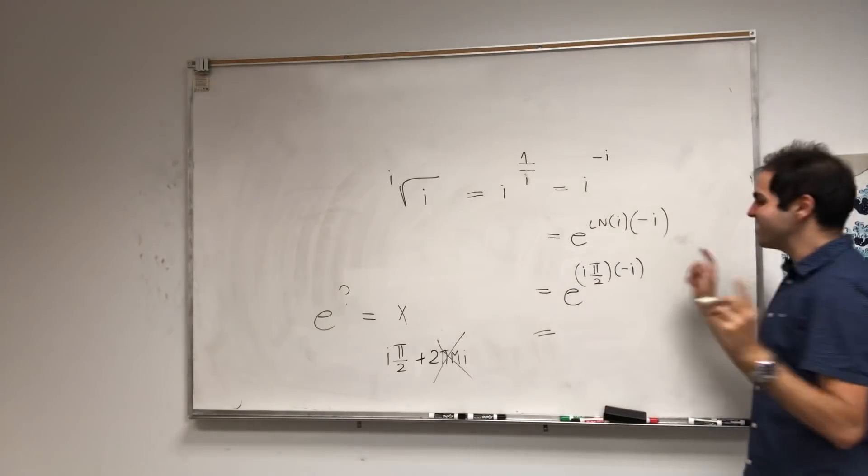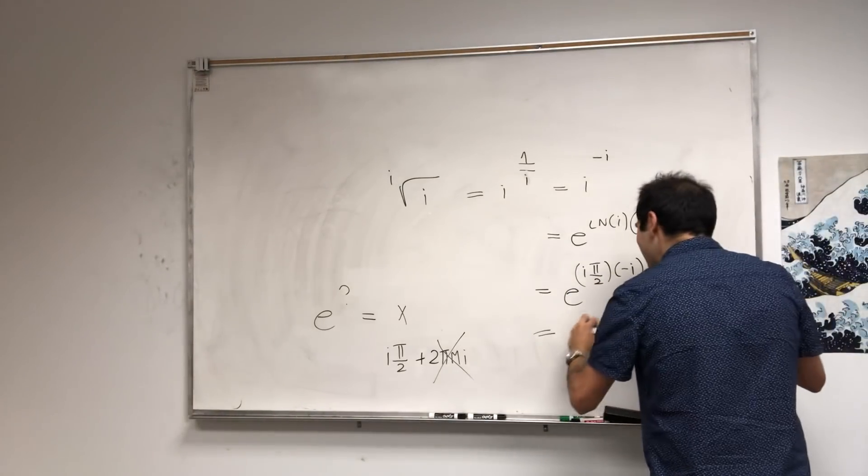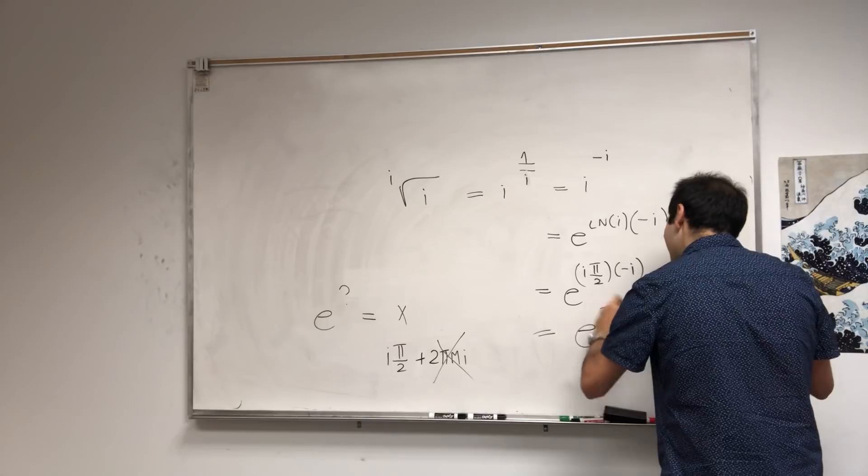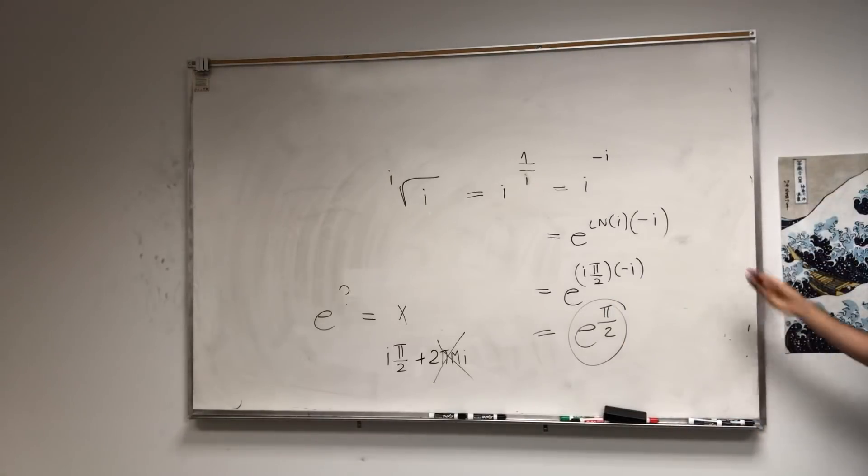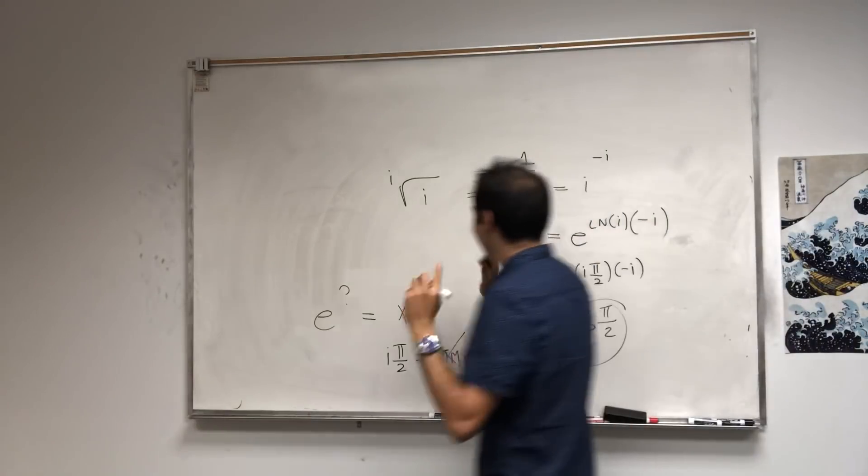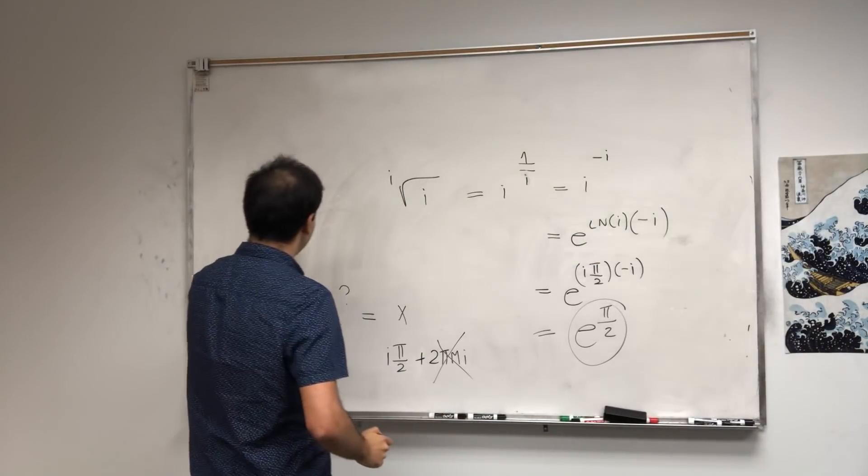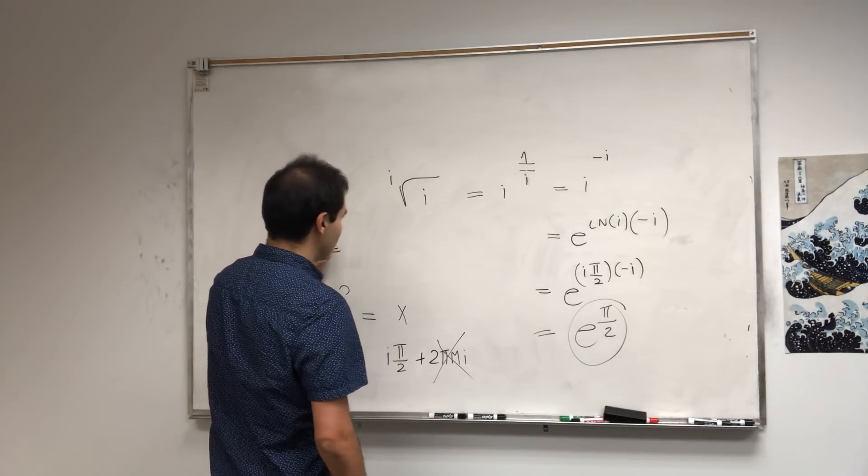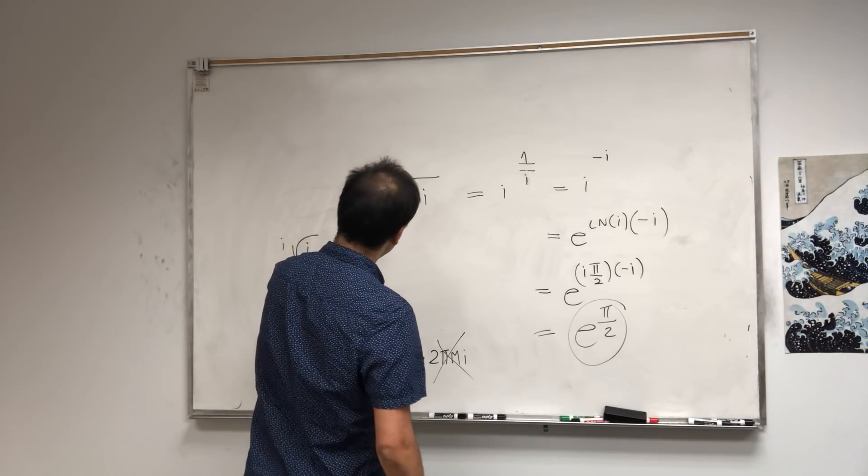And oh my god, I didn't realize this, but do you get a real number? e to the pi over 2. Oh my god! And yes, but I just realized it kind of makes sense because to get the i-th root of i, you get e pi over 2.